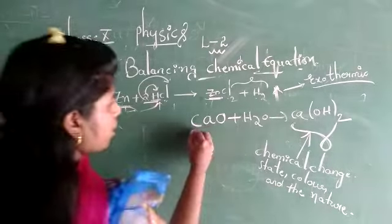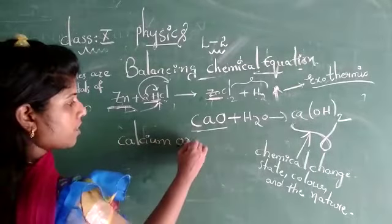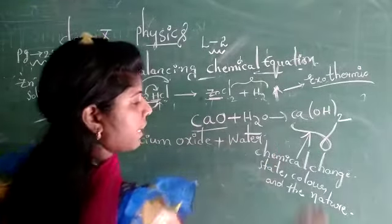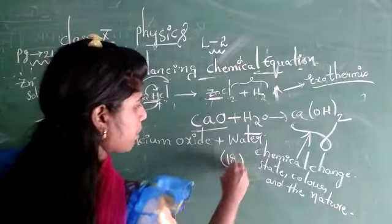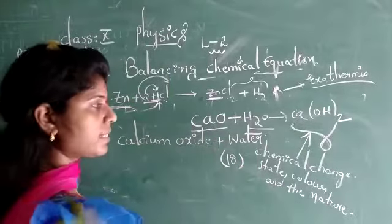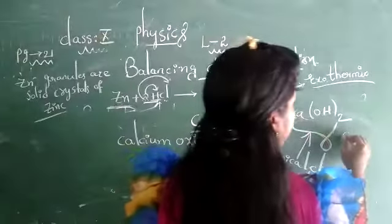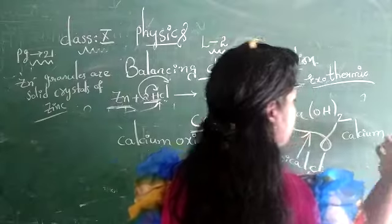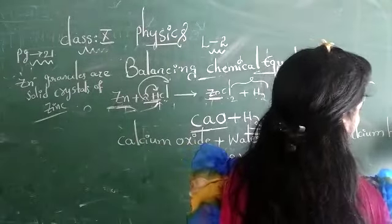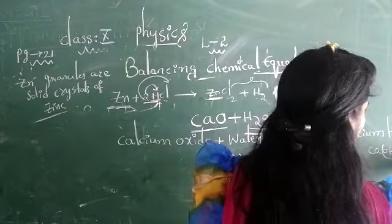Calcium oxide plus H₂O (water, molecular weight 18) gives calcium hydroxide. Calcium is denoted with symbol Ca, oxygen with O. Calcium hydroxide is Ca(OH)₂ — Ca, and OH taken twice, where OH is the hydroxide group.